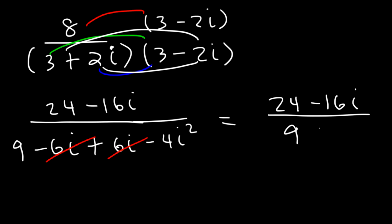Negative 4i squared is plus 4, because i squared is negative 1. And 9 plus 4 is 13. So we can write it as 24 over 13 minus 16 over 13i. Now it's in standard form.